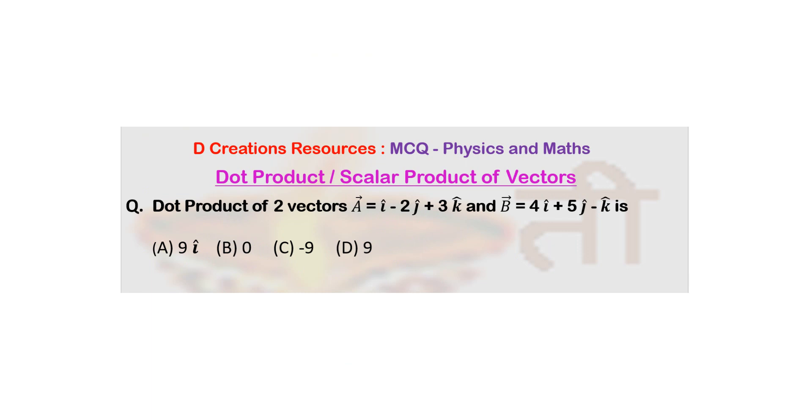So what is going to be your answer? It is 4 minus 10 minus 3. So minus 9. So C is going to be the answer.